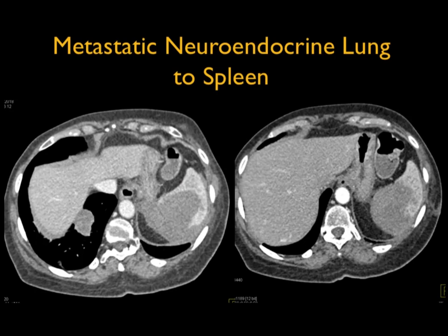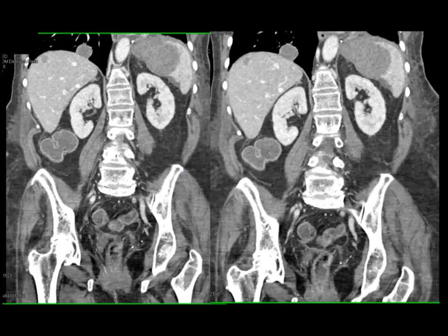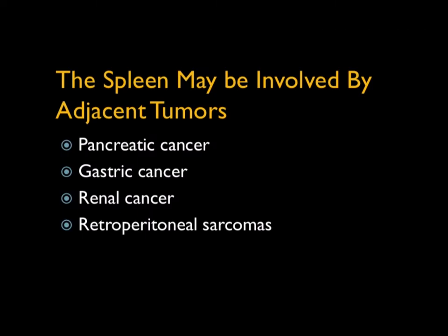You can see how quickly these lesions become isodense. We have neuroendocrine tumor metastatic to the spleen from any site — you can see this large, basically exophytic mass, and you can also see implants in the right lower lung. When we talk about splenic involvement by adjacent tumors, you think about the spleen touching the stomach and pancreas — that's where we're going to get involvement, also the kidney and sarcomas of the retroperitoneum.